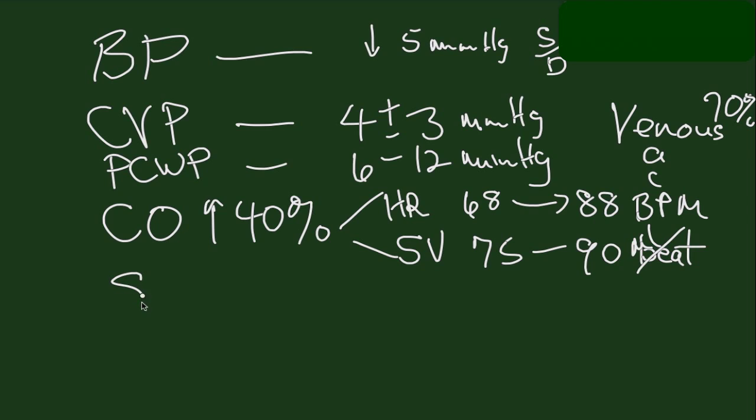Now, the systemic vascular resistance decreases in pregnancy, due to the AV shunt effect of the placenta and the vasodilator effects of progesterone and prostaglandins.